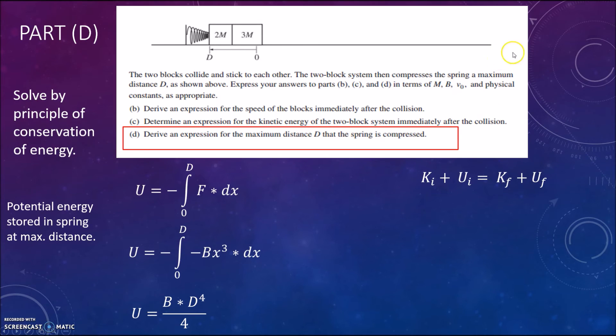So substituting in our kinetic energy value from part c we get this equation over here and substituting in the potential energy equation from over here we get Uf. So solving for d with a little bit of rearranging gives us this expression and for your final answer you can simply just leave it as that to all raised to the power of 1 over 4.